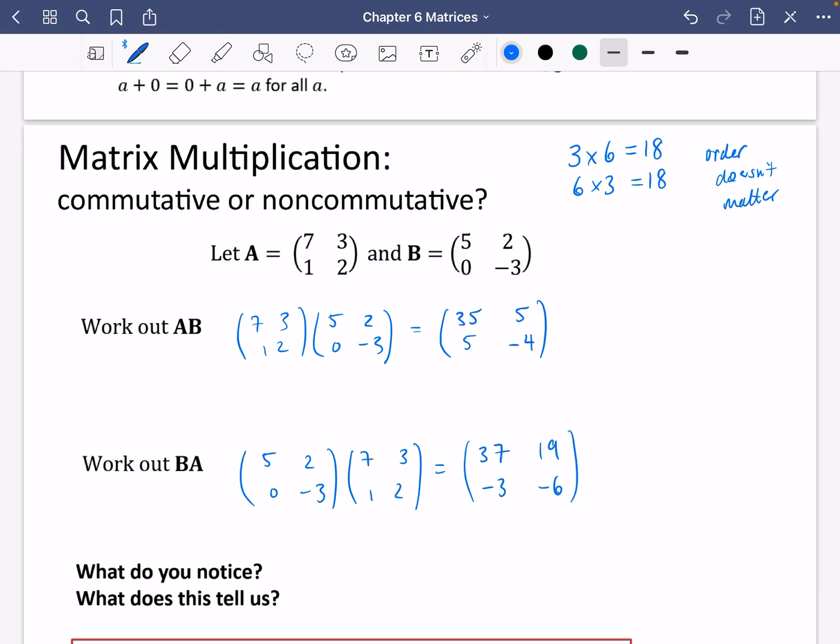So clearly here what we've noticed is that the answers are different. So the answers here are different. What this means is that AB does not equal BA. Now this isn't always going to be true. There may be some cases where AB does equal BA. But in general this is not going to be true. So this tells us that matrix multiplication is non-commutative. In other words the order matters.